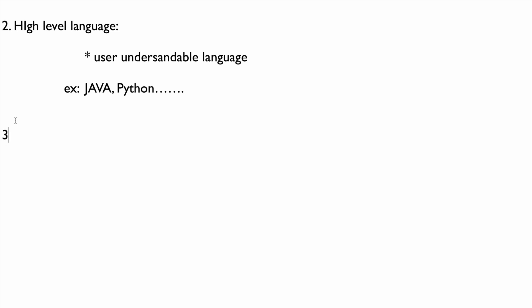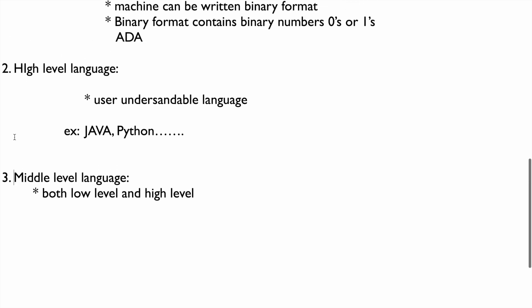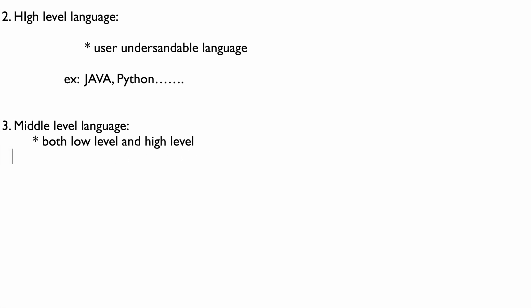The third type is middle-level language. Middle-level language accepts both low-level language instructions and high-level language instructions. Examples of middle-level languages are C and C++.